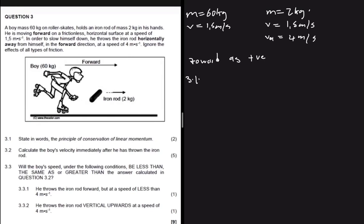3.1 says: state the principle of conservation of linear momentum. It states that the total linear momentum in an isolated system is conserved. That is to say, the sum of momentum before equals the sum of the momentum after.